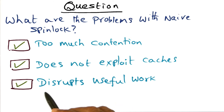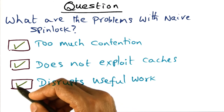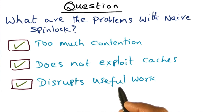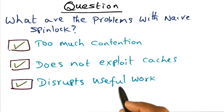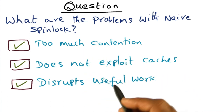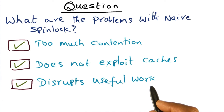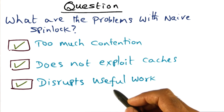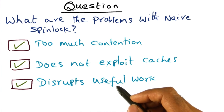The third problem is that it might disrupt useful work. When a processor releases the lock, it wants to go on and do useful work. If there are four processors trying to acquire the lock, only one of them is going to get it, and the others have to back off. The one processor that did get the lock has useful work to do, but because of all the contention, it is being impeded by all the other processes trying to acquire a lock that is not available.